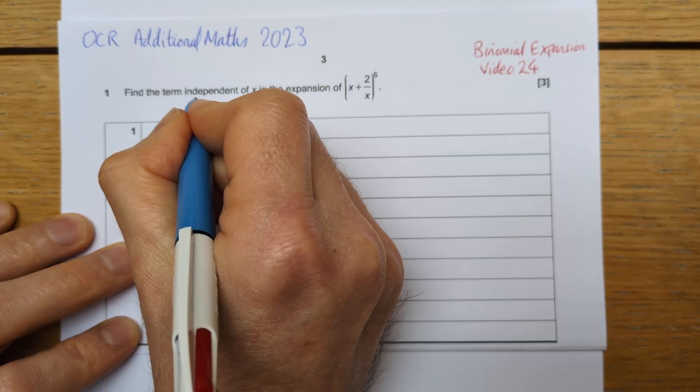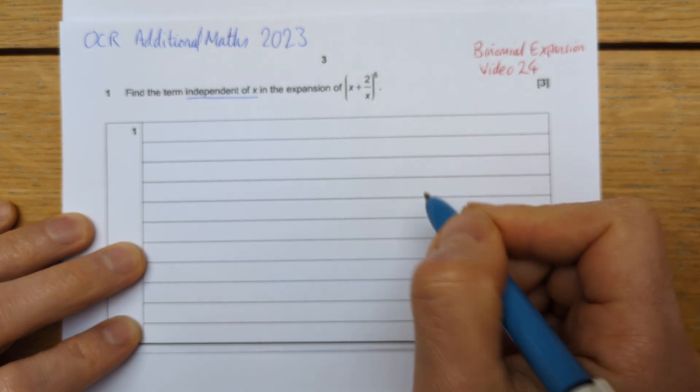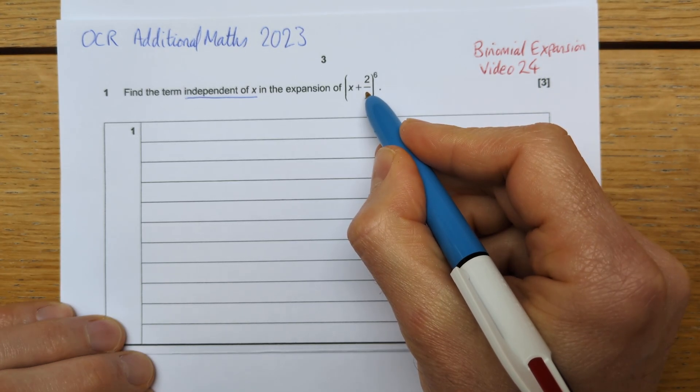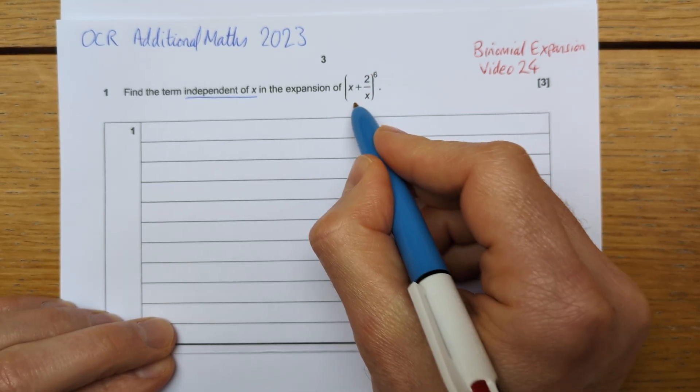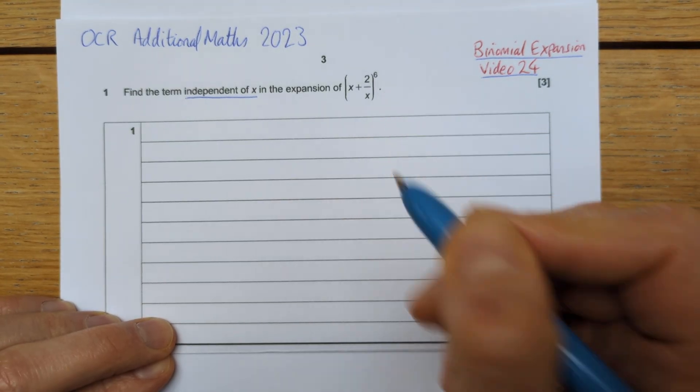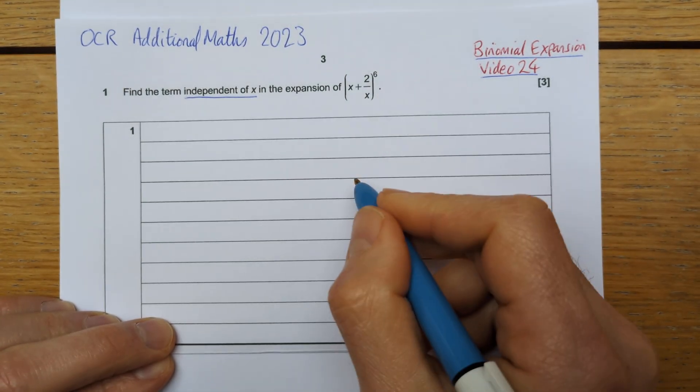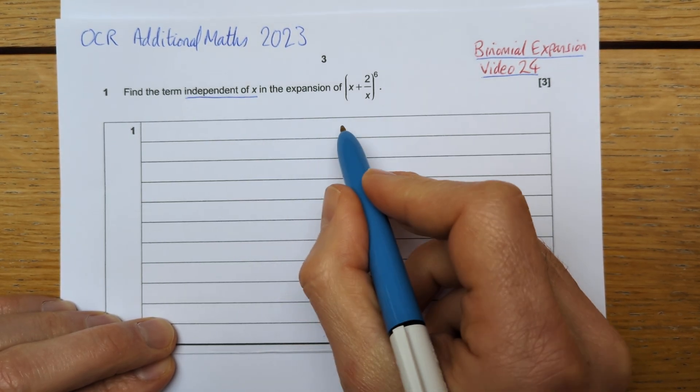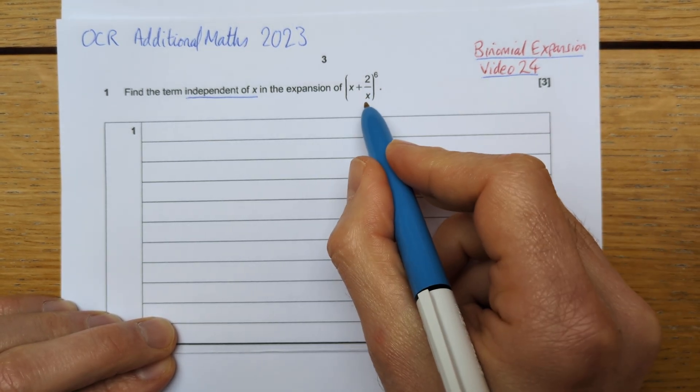Find the term independent of x in the expansion of this binomial. If you're not very confident with binomial expansion, this is quite a difficult question, so you should probably watch video 24 from my channel before having a look at this solution. I'm going to assume you have certain knowledge that you need to be able to answer this.